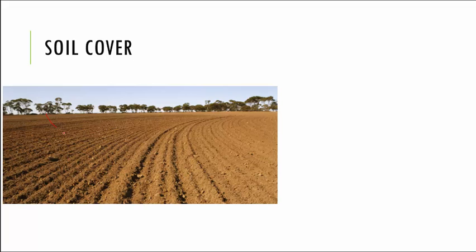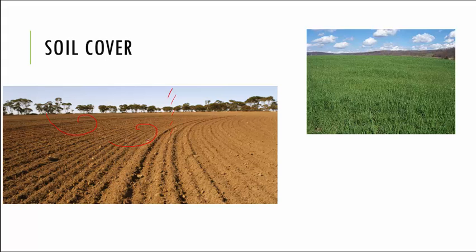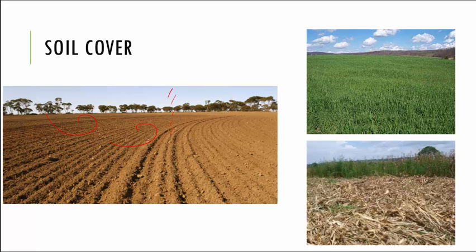Now imagine if there were very strong winds or if it starts to rain — what would happen to all the soil? It will all get carried away and there will be soil erosion. So in order to prevent this, farmers generally either grow grass on their land after harvesting their crop, or they cover that land with dried vegetation. These two methods categorize under soil cover, and because of them no soil erosion can happen.